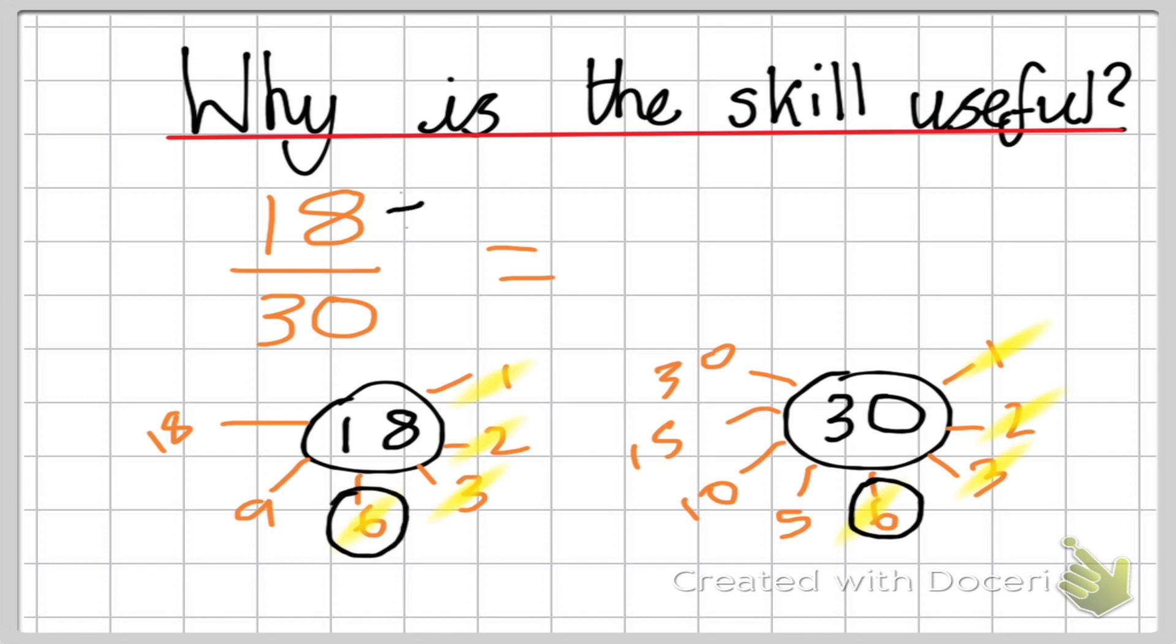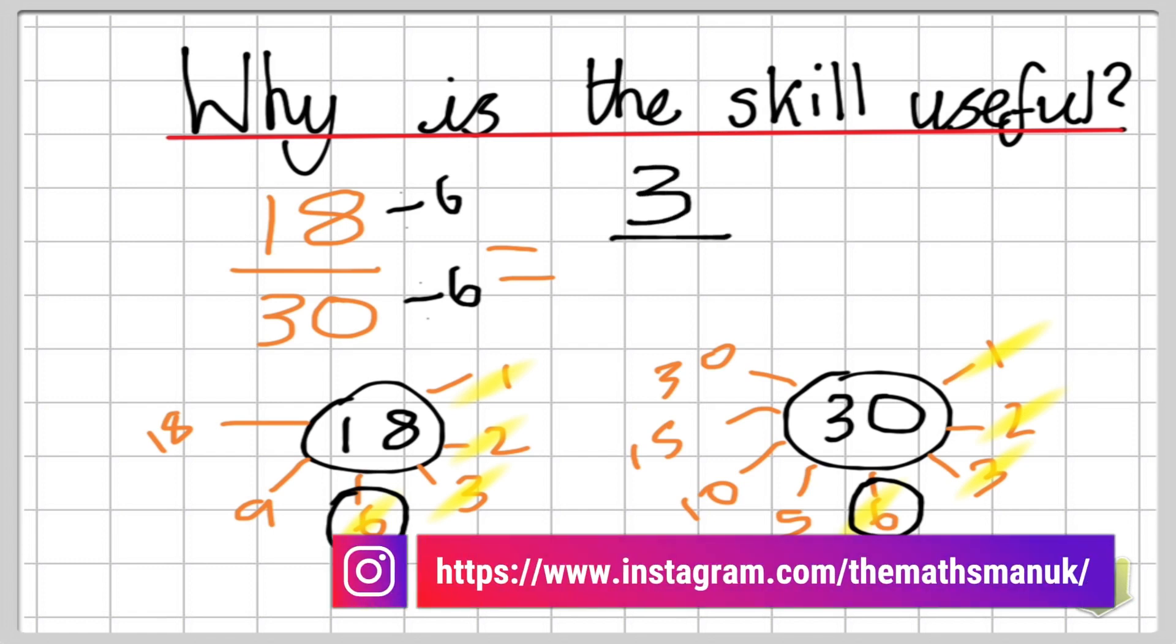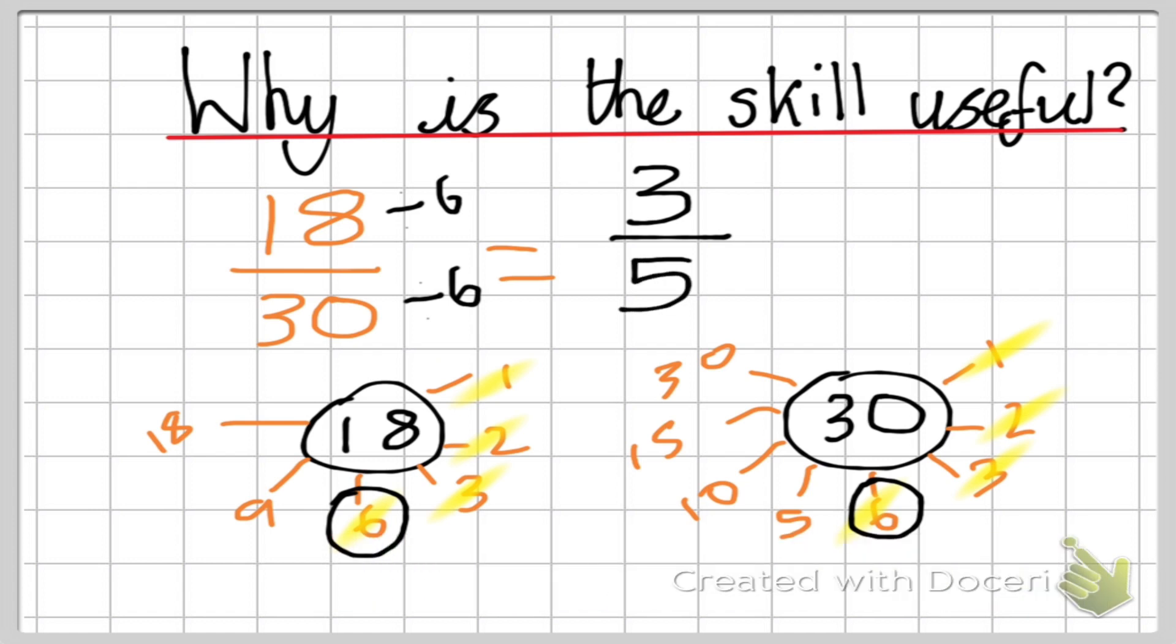So what I'm going to do is I'm going to divide this number by 6, the numerator, and I'm going to divide the denominator by 6 as well. So 18 divided by 6 equals 3, and 30 divided by 6 equals 5. So I've just simplified 18 thirtieths to 3 fifths by using my knowledge of the greatest common factor.